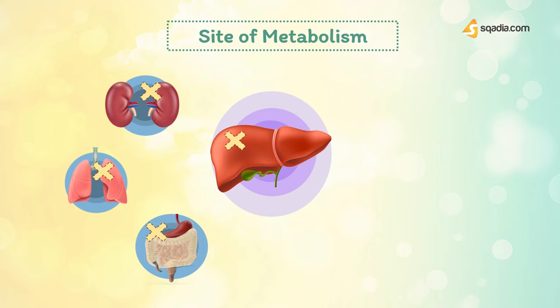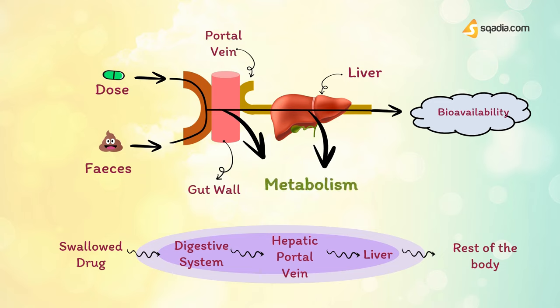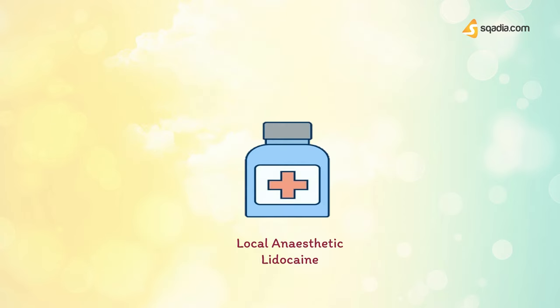Orally administered drugs, which are usually absorbed in the small intestine, reach the liver via the portal circulation. At this stage, or within the small intestine, the drugs may be extensively metabolized. This is known as first-pass metabolism and means that considerably less drug reaches the systemic circulation than enters the portal vein. Drugs subject to a high degree of first-pass metabolism, such as the local anesthetic lidocaine, cannot be given orally and must be administered by some other route.